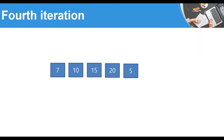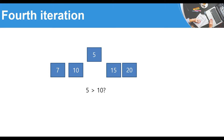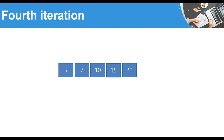In the fourth iteration, we start the backward loop with the fifth element, which is 5. Is 5 greater than 20? No. Is 5 greater than 15? No. Is 5 greater than 10? No. Is 5 greater than 7? No. So 5 must be swapped past all of them. After the fourth iteration, the list is fully sorted: 5, 7, 10, 15, 20.